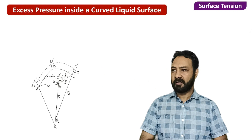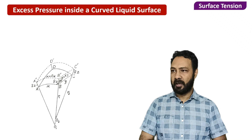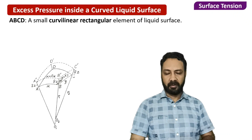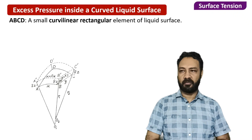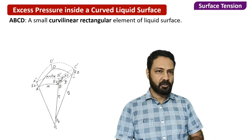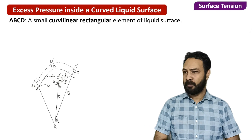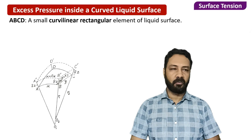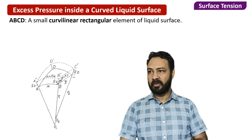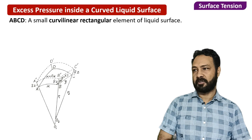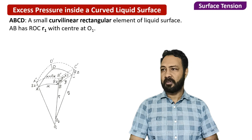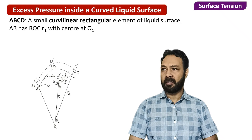Suppose the main surface is ABCD. ABCD is a small part of a curved liquid surface. Whenever we take any small element, it has to be a rectangular element. So ABCD is a rectangular curvilinear element of a liquid surface, with parts AB, BC, CD, and DA. The parts AB and BC have radii of curvature R1 and R2 respectively.